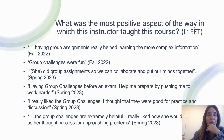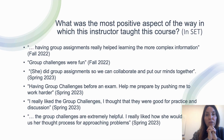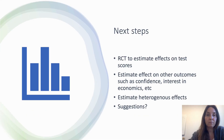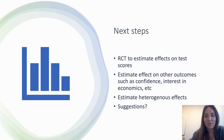Some of the comments that I received are very interesting, because this was from the question that was not directed to the group challenge — it was about what was the most positive aspect of the way the course was structured. And many students mentioned the group challenge. So that was very encouraging. The next steps would be to estimate, maybe through a randomized control trial, the effects on scores and on other outcomes such as interest in economics, and possibly heterogeneous effects. I'm open to any suggestion you may have.